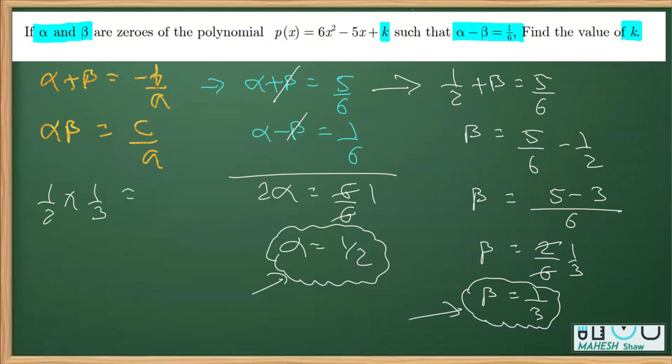C is the constant which is K and A is 6. So you'll get C by A which is K over 6.